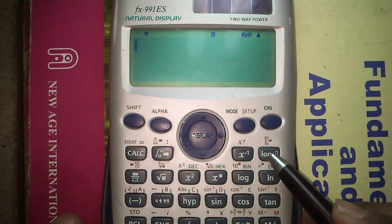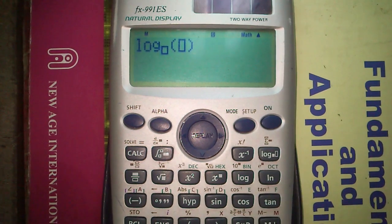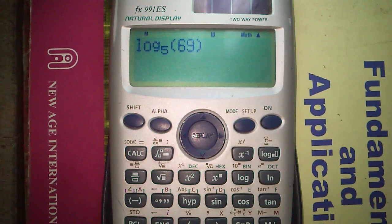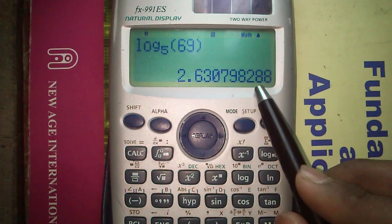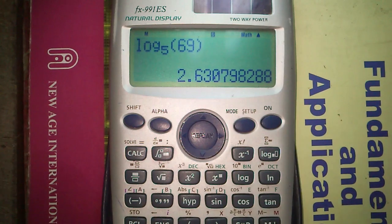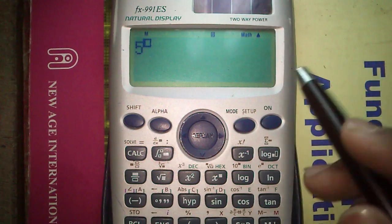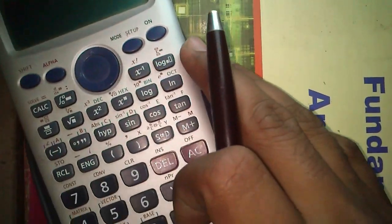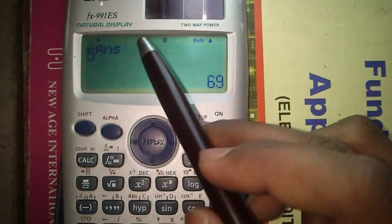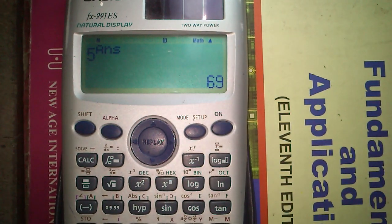Similarly to get the log base operator, press this button diagonally to the log. Say if log base 5 of 69 press equals is something, then 5 to the power something will be 69. To check that, 5 to the power button, and our last answer is stored under the answer variable. So press answer and equals. So 5 to the power answer, or 5 to the power something, is also equal to 69. So that is the meaning of logarithm.